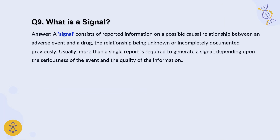As a pharmacovigilance professional, you will deal with signal detection. A signal consists of reported information on a possible causal relationship between an adverse drug reaction and a drug, where the relationship is unknown or previously undocumented. Usually more than one report is required to generate a signal, depending on the seriousness of the event and the quality of the information. The primary piece of information expressing a possible causal relationship between an adverse event and a drug is termed a signal.